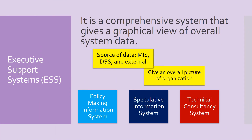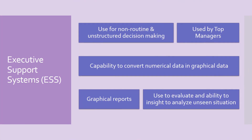For top or executive managers, Executive Support Systems (ESS) generate a graphical view of overall system data. It is a comprehensive dashboard system that shows the overall picture of organizational data. Examples include policy-making information system, speculative information system, and technical consultancy system. The main data sources for ESS are MIS, DSS, and external sources. ESS is used for non-routine and unstructured decision-making in situations that are totally undefined and doubtful, making decisions not an easy task.